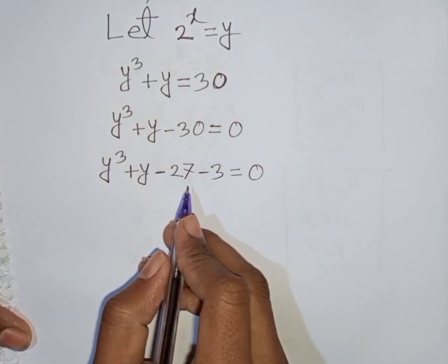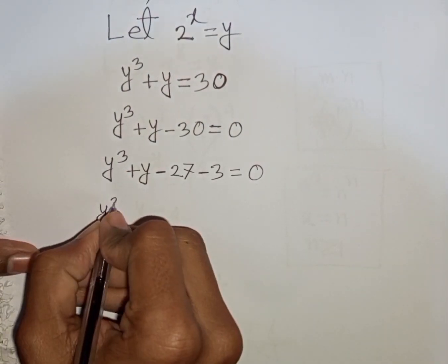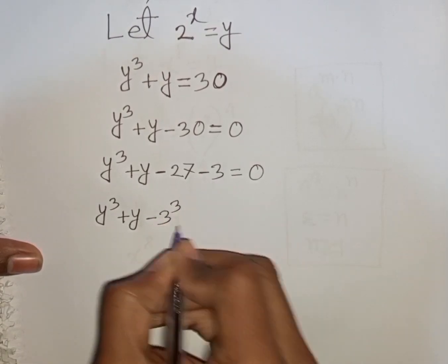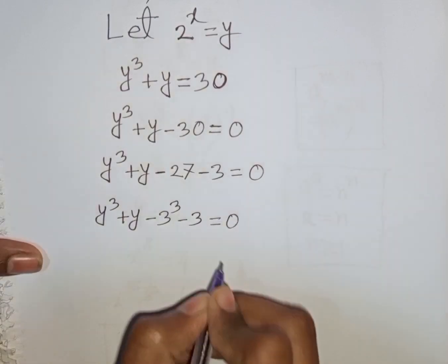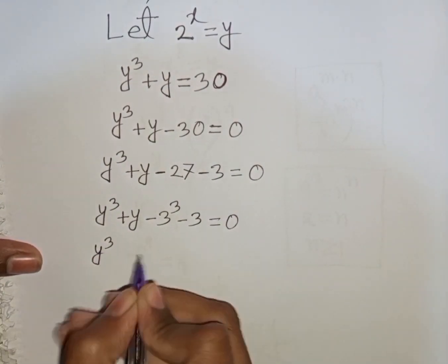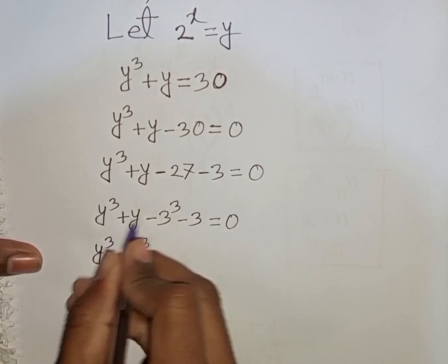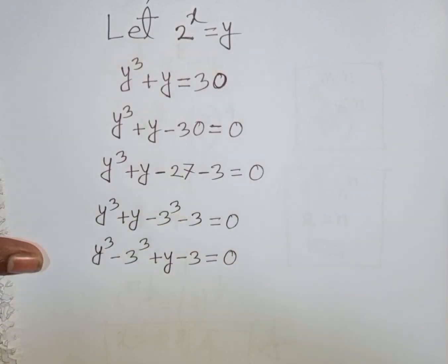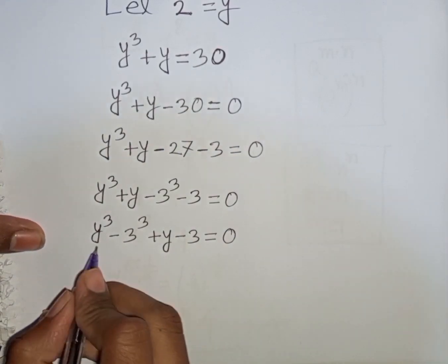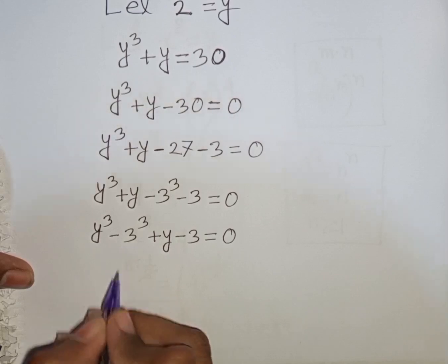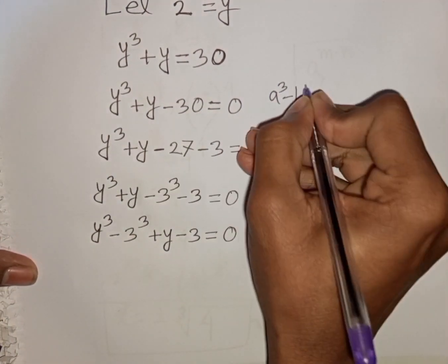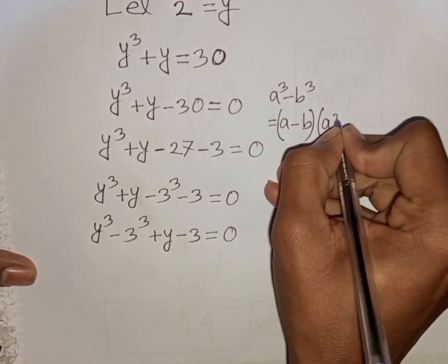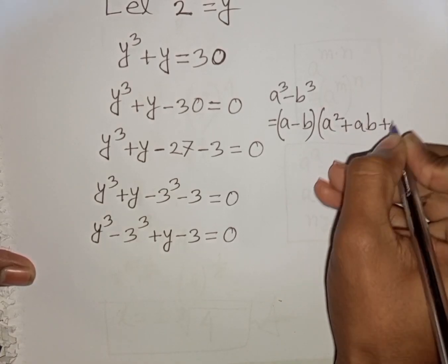Most of the time you can understand this process. Now we have y cubed plus y, then minus 27 is the same as minus 3 cubed, then minus 3 is equal to 0. We now have y cubed minus 3 cubed, plus y minus 3, equals 0. Here you can apply the formula a cubed minus b cubed, where a is y and b is 3. According to this formula: a cubed minus b cubed equals a minus b times a squared plus ab plus b squared.